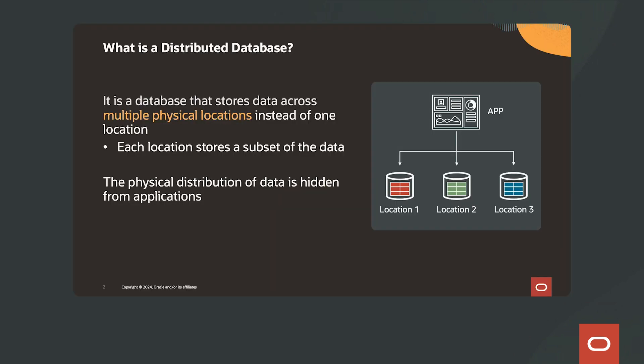Oracle's Globally Distributed Autonomous Database transparently distributes data across the globe for scale, survivability, and data sovereignty. A distributed database stores data across multiple physical locations instead of one location. Each location stores a subset of data. The physical distribution of data is hidden from the applications, and requests are transparently routed to the right location.